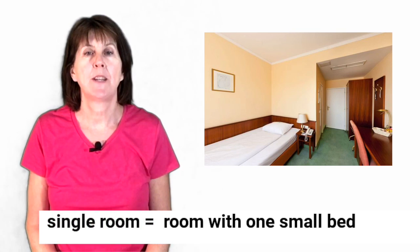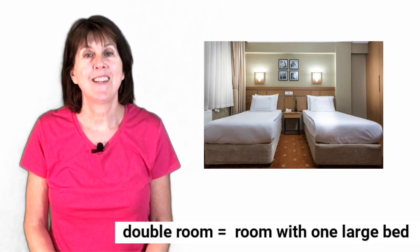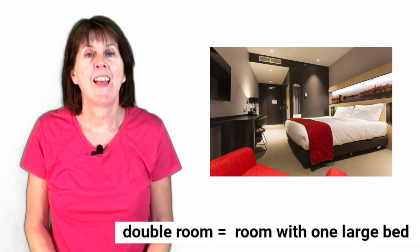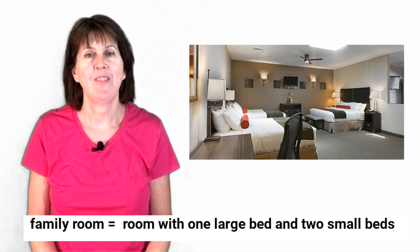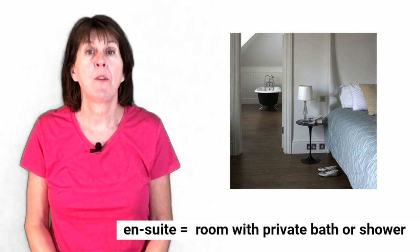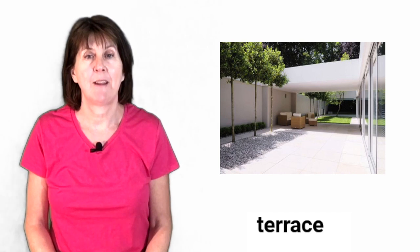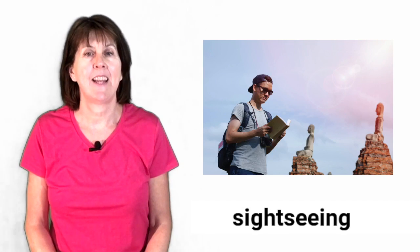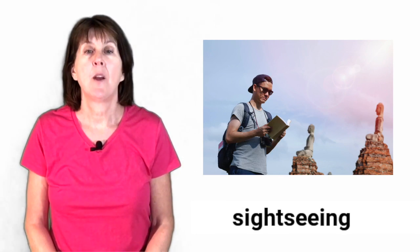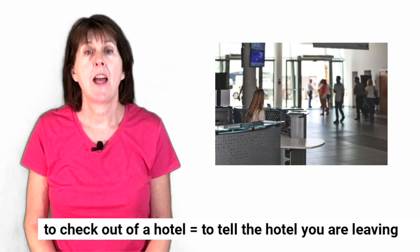Single rooms in the hotel had just one small bed. Twin rooms had two small beds, double rooms had one large bed, and family rooms had one large bed and two small beds. Most of the rooms were en-suite with their own private bath or shower. All rooms had a balcony or a terrace with a view of the sea. I spent the next two weeks sunbathing on the beach and sightseeing in the local area. It was with a great deal of reluctance that I eventually checked out of the hotel and returned home.